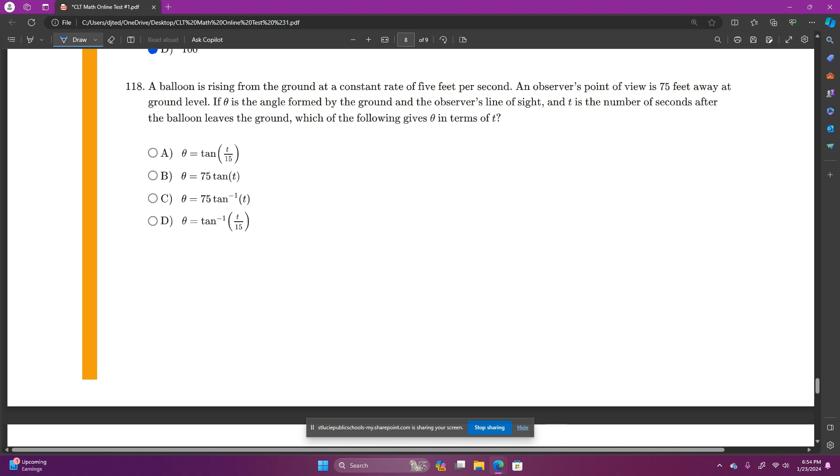Number 118, a balloon is rising from the ground at a constant rate of 5 feet per second. An observer's point of view is 75 feet away at ground level. If theta is the angle formed by the ground and the observer's line of sight, and t is the number of seconds after the balloon leaves the ground, which of the following gives theta in terms of t? So when we're looking at this, we can graph that, going up some feet.